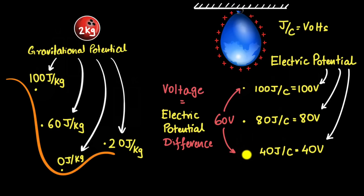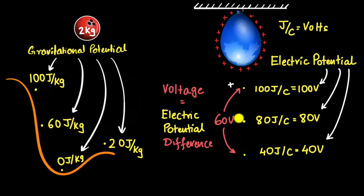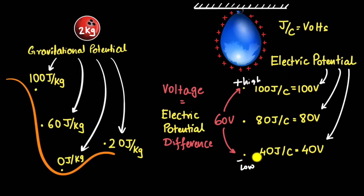What if a coulomb went the other way? Then it would gain 60 joules of potential energy — the opposite. In general, whether a charge loses or gains potential energy depends on which point is at a higher potential and which is lower. To indicate that, we use positive and negative signs. The higher potential value gets a positive sign, the lower gets a negative sign — not meaning something positive or negative is there, just indicating which is higher and which is lower.